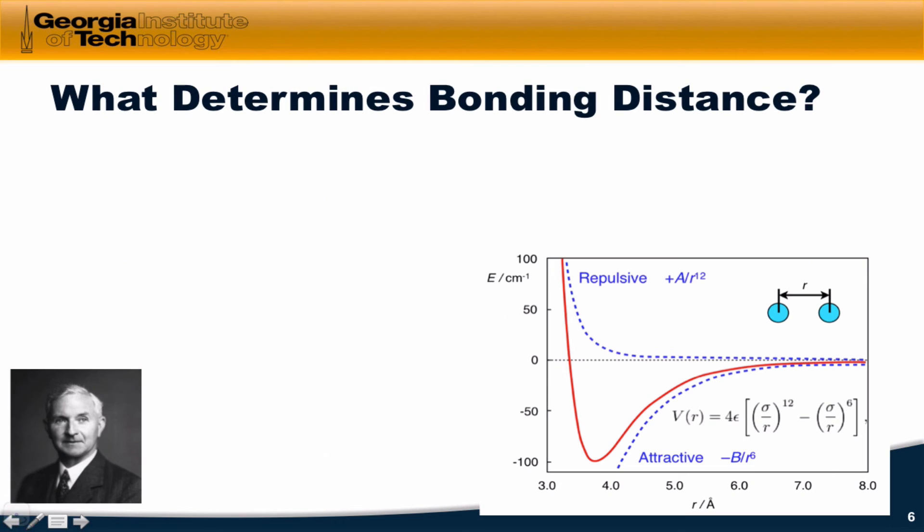One question to ask when we're looking at the bond between two atoms in a diatomic molecule, a molecule defined by two atoms, is what determines the equilibrium or the most stable bonding distance between them? A fairly straightforward way to approach this involves considering repulsion between the electron clouds of the two atoms, which is going to increase the energy as the two atoms get closer to one another, and the attractive forces between the electrons and the nuclei of the two atoms, which is going to decrease the energy as the two atoms approach.